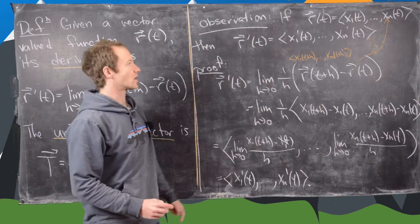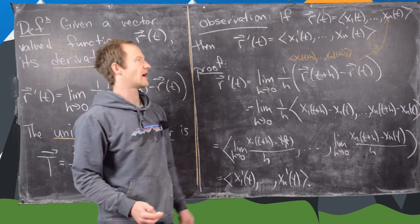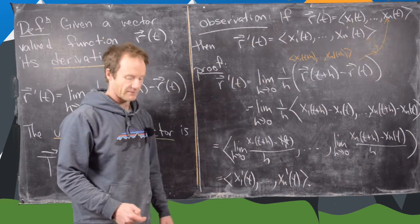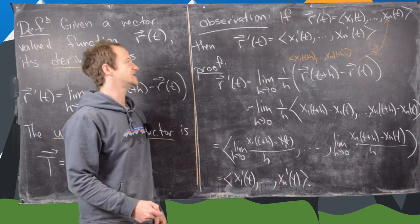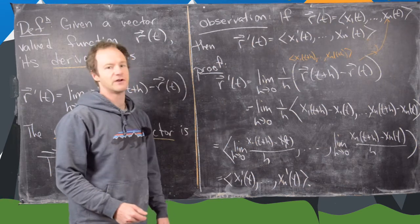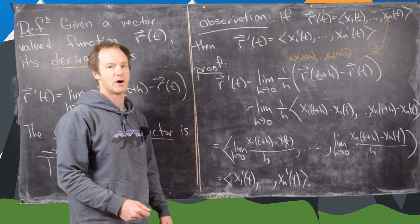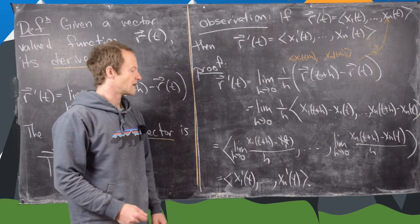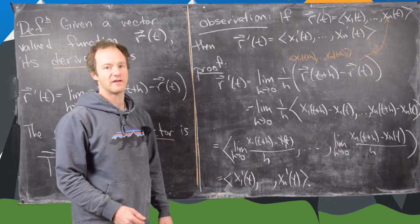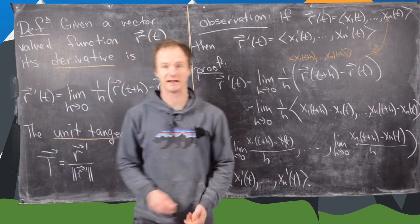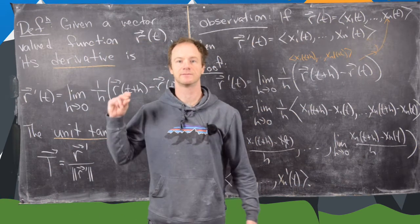In other words, if we want to find the derivative of a vector-valued function, we just need to find the derivative of each of the component functions. I'm going to clean up the board, and then we're going to look at an example of this.